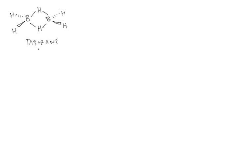Di-borane belongs to the D2H point group, which is actually the same point group as ethylene. So many of the conclusions we'll draw about the form of the molecular orbitals for di-borane could also probably apply to the ethylene molecule, and that would be something you could investigate separately.